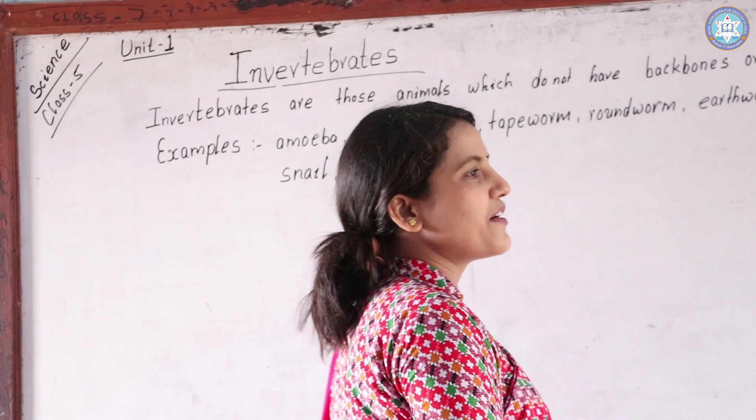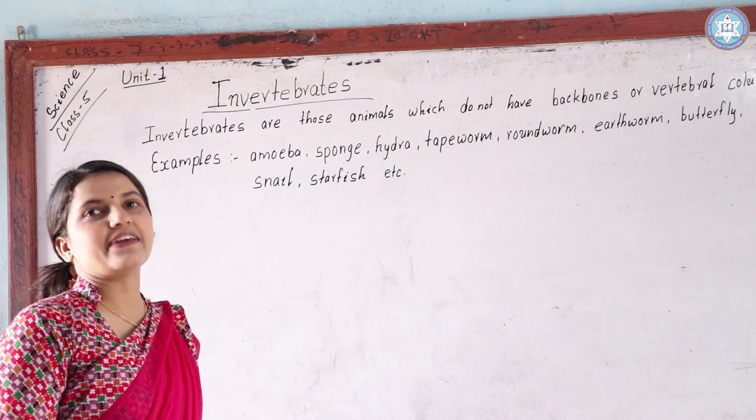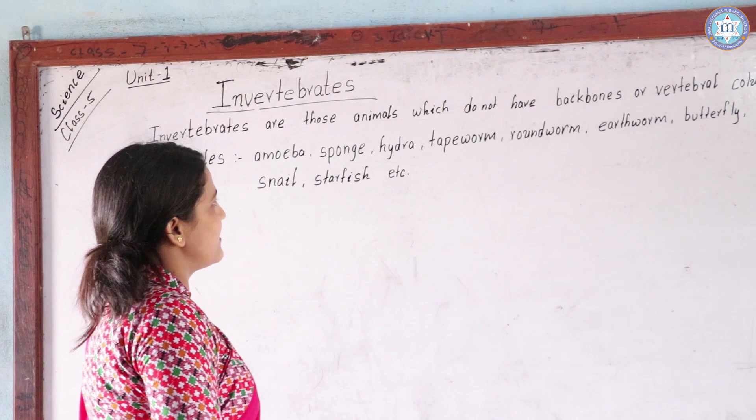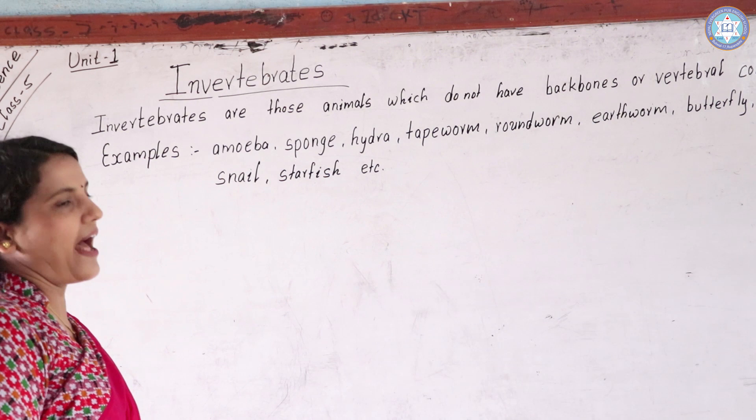We can see various types of animals in our surroundings. We can see different types of animals — they may be like Butterfly, Housefly, Tapeworm, Roundworm, Snail, etc. And they may be Vertebrates or Invertebrates. Today we are learning about Invertebrates.